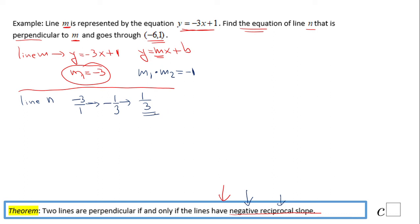Now we know the slope of line N, which I'm going to call m2, and we know the point (-6, 1). Now we can find the equation of line N using either the slope-intercept form or the point-slope form, which I'm going to use here: y minus y1 equals m times (x minus x1). This is called the point-slope form, very useful.